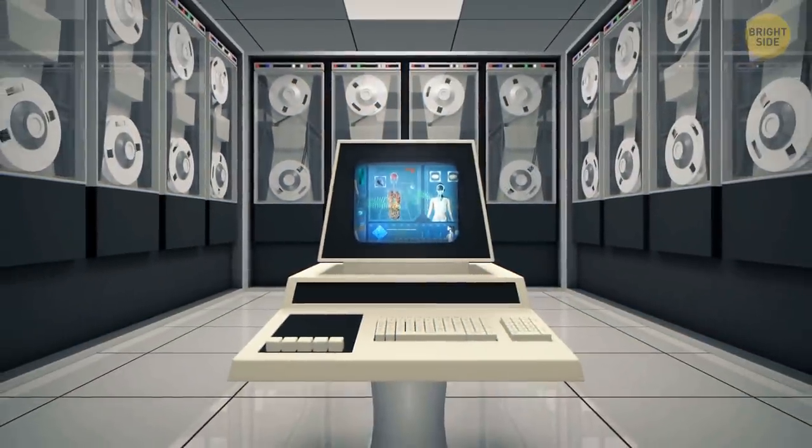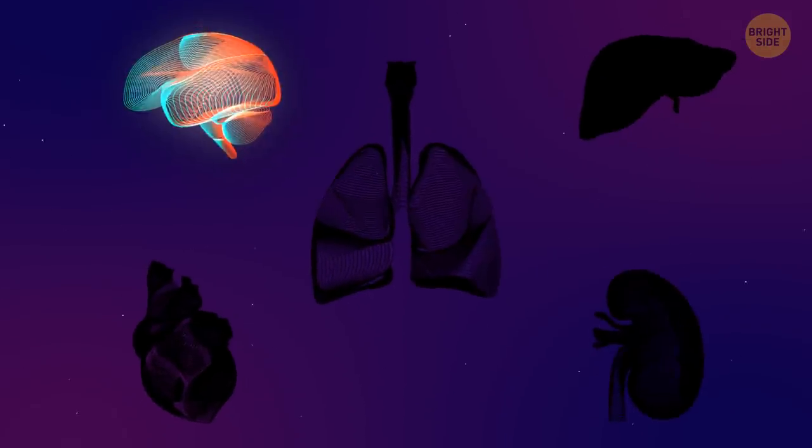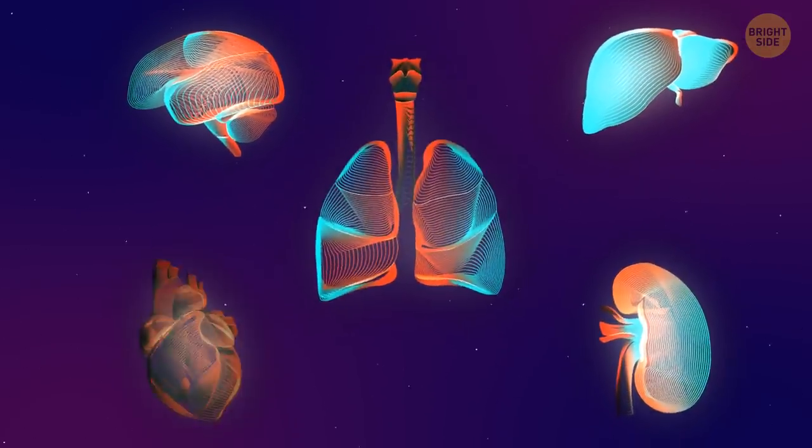Your body has 78 organs, but only 5 of them are essential for survival. The brain, liver, kidney, lungs, and heart.